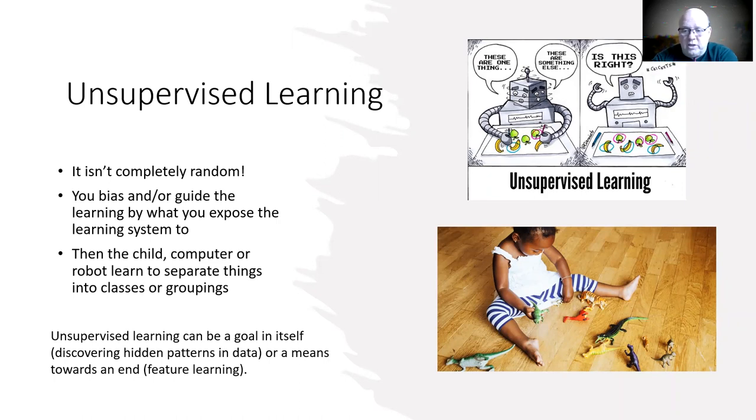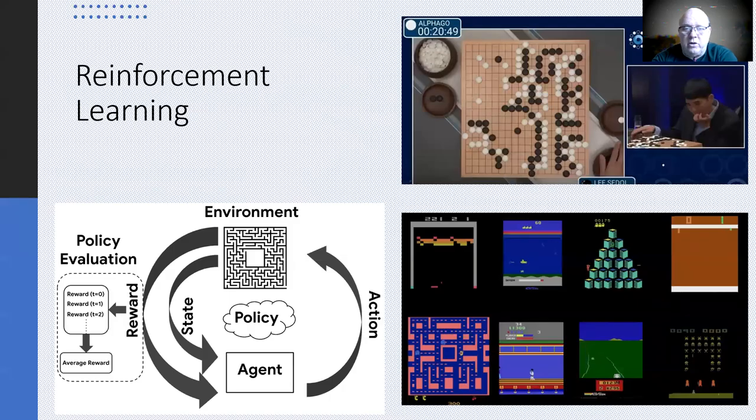You bias and guide the learning by what you expose the learning system to. The child, computer, robot learns to separate things into classes or groups. For example, on the floor in front of the child are dinosaurs and a tiger. Maybe after a little bit of playing, the kid can tell the difference between a dinosaur, alligator, and the tiger. Unsupervised learning can be a goal in itself, discovering hidden patterns in data, or it's a means towards an end, learning a feature. If your machine helped you learn the feature, then you can use that feature in how to use the data.